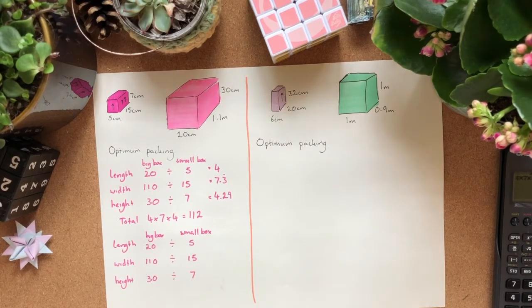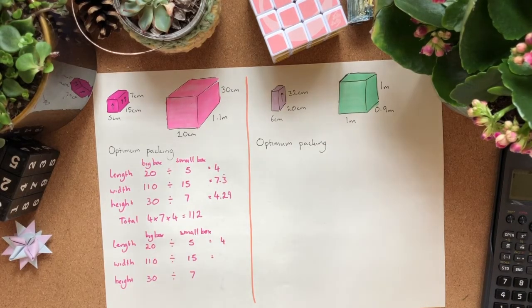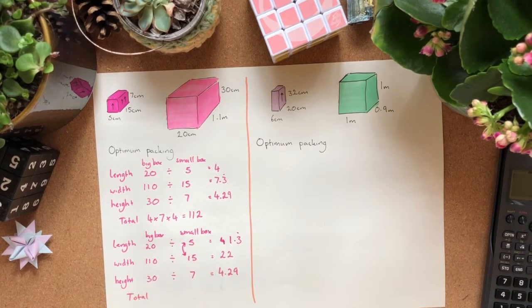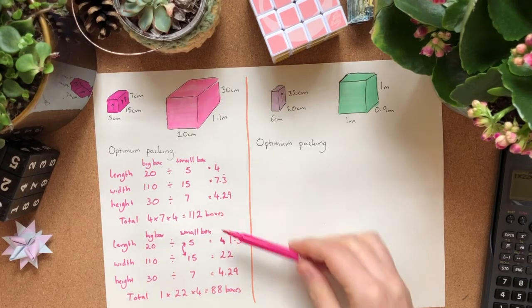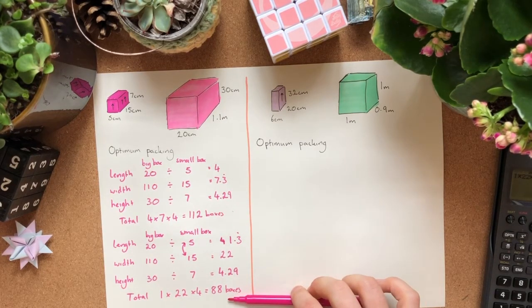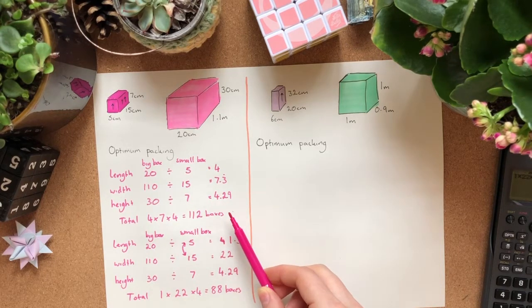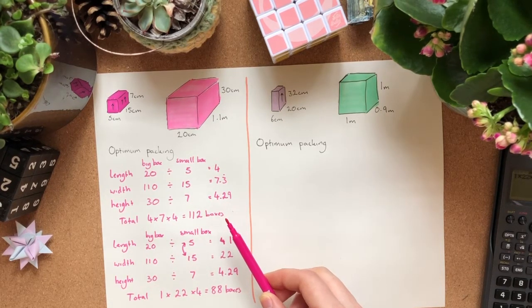But we'll change the small box length and width around. Everything's the same so far. The small box has been rotated. It's still the same height though. Do the division. Wait, what? I had one job. One job. To switch the length and the width around. And I didn't do it. Ugh. Height's still gonna be the same. It's time to times. So turns out I can get 112 boxes in this way. But only 88 boxes in this way. Wah wah wah. Better off doing it that way. Glad I did the maths to check.